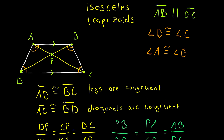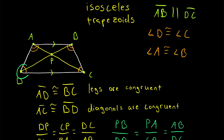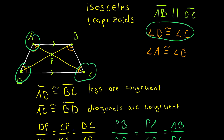So those are just some of the properties of isosceles trapezoids. Remember that a trapezoid is a quadrilateral with exactly one pair of parallel sides called the bases. Two angles adjacent to the same base are called the base angles, and an isosceles trapezoid is a trapezoid whose base angles are congruent — meaning each pair of base angles is congruent. So angles D and C are congruent and angles A and B are congruent.